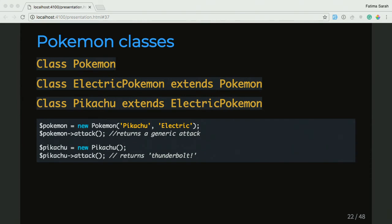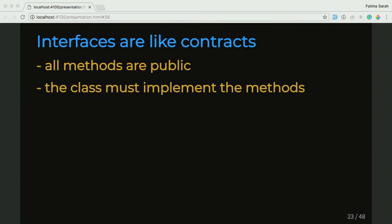Interfaces are like contracts. It's code that specifies that a class must implement everything that's in the interface — it's kind of like a contract where you have to agree to certain rules. Everything in the interface is public, and the class has to implement everything in there. In our case, our Pokemon class will be our interface. Also, you can't instantiate an interface — you can't create a type of an interface. You have to implement it in a class, and then you can create an object of that class.